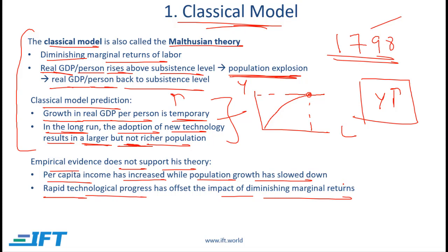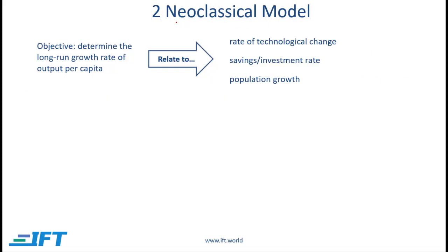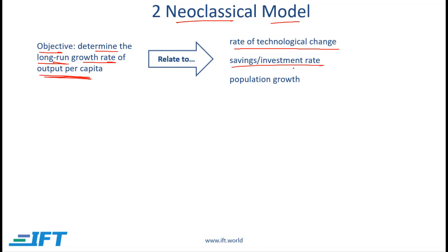So what we see is that this model might have explained economic growth two centuries ago but it does not work for our current time. We therefore need other models. The neoclassical model was developed by Robert Solow in the 1950s. The primary objective of this model is to determine the long-run growth rate of output per capita and then to relate this growth rate to three variables: the rate of technological change, the savings-to-investment rate, and population growth.